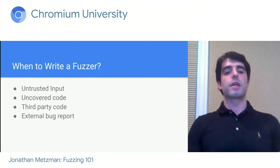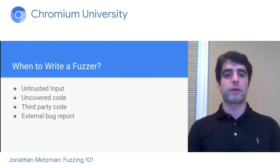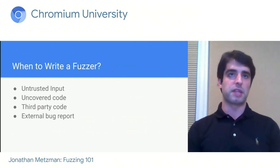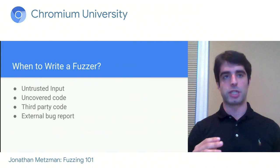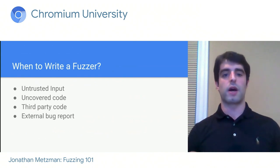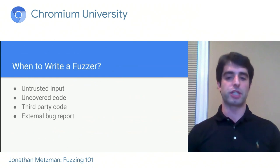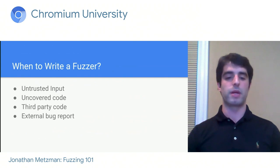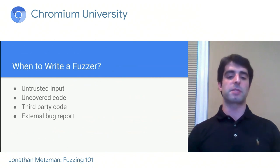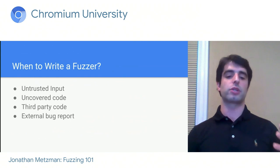So when should you write a fuzzer? If you're working on code that handles untrusted input — input not directly provided by Chromium itself or the user, like most web pages or images — it is very important to write a fuzzer. You should also write one when there's uncovered code in a coverage report, when you're introducing third-party code into Chromium, or when you receive a vulnerability report. If someone outside Chromium reports a crash in code that isn't covered by fuzzing, it's a sign you should improve fuzzing in that area.